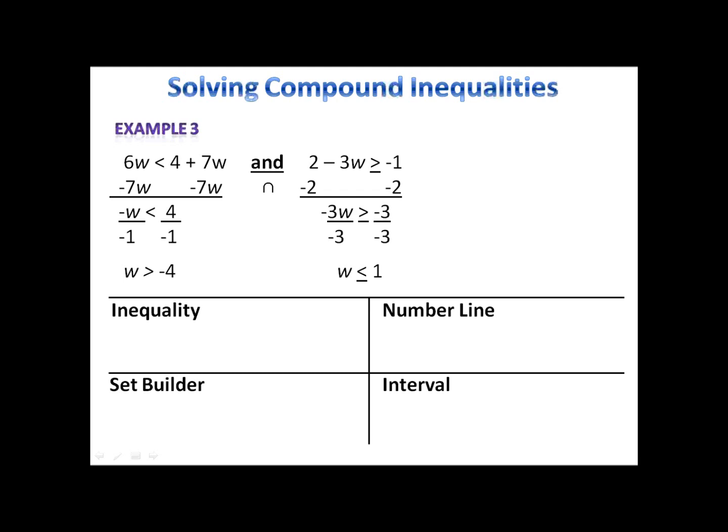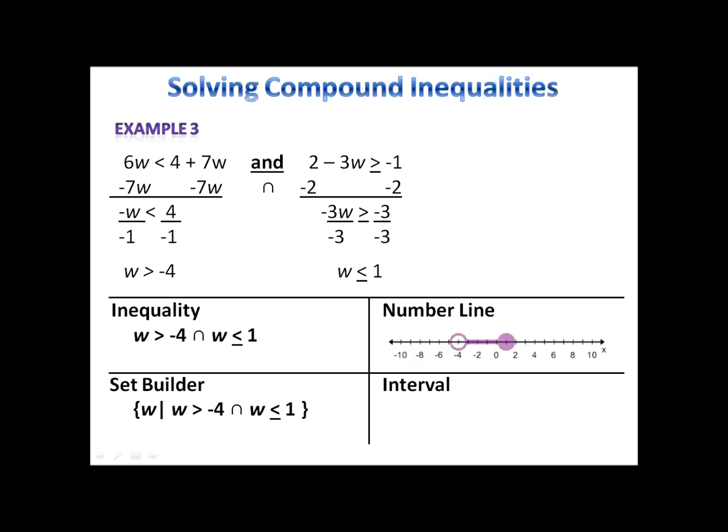Here's our inequality. For set builder, I just put it into the set builder package. I'm personally a fan of the number line because it lets me see what's going on. I have an open circle at negative 4 and I shade to the right. Then I have a closed circle at 1 and I shade to the left. The area they have in common is what I see in purple. Finally, interval notation: I go from negative 4 up to 1.